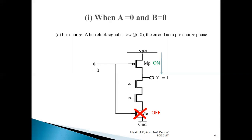During pre-charge phase, we do not consider whether A and B are 0 or 1, because the evaluate MOSFET is off. Whether N1 or N2 is on or off does not matter, since evaluate MOSFET is completely off and logic level 0 can never be transferred as output. Hence there is no point in evaluating whether N1 and N2 are on or off during this phase.